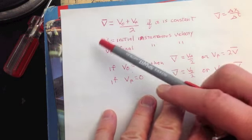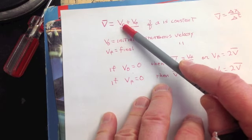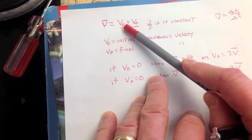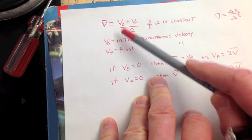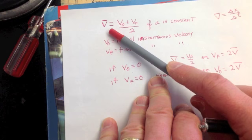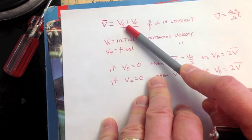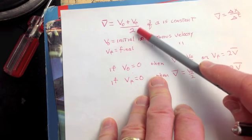It turns out there's another formula for average velocity, and that is that your average velocity equals your initial, the zero stands for original or initial, some books will use I, but V₀ is my initial instantaneous velocity. So my average velocity equals my initial instantaneous velocity plus my final instantaneous velocity divided by two.